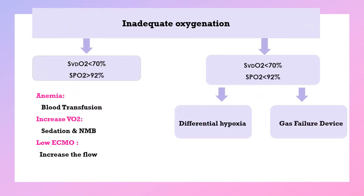Inadequate oxygenation means oxygen saturation from the drainage cannula is less than 70%, which can be read from the console. But if oxygen saturation from the patient is more than 92%, that means the patient is anemic — we can transfuse blood — or there is increased oxygen consumption, so we can use sedation or neuromuscular blockade.